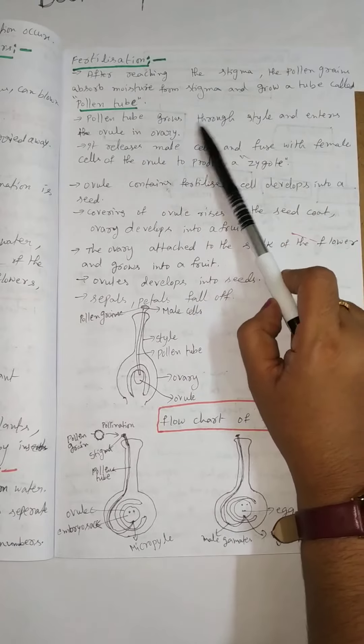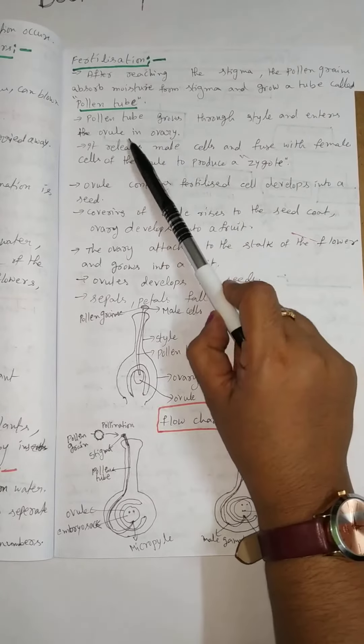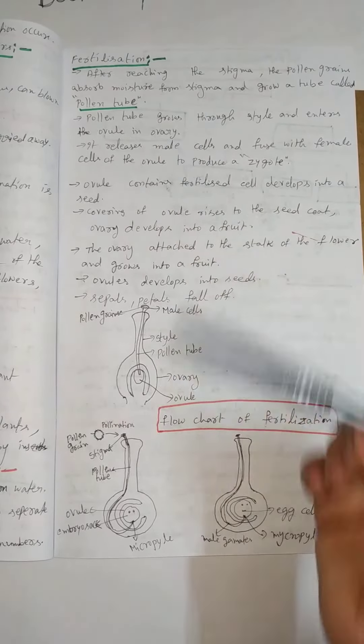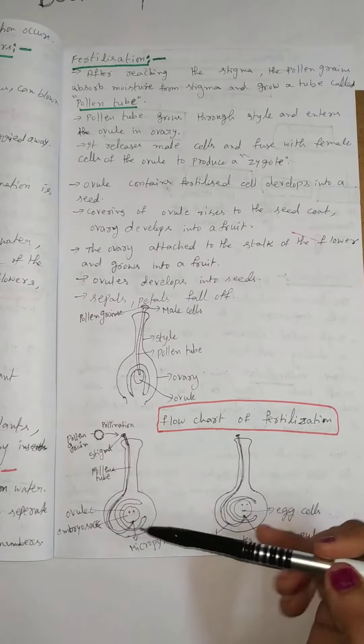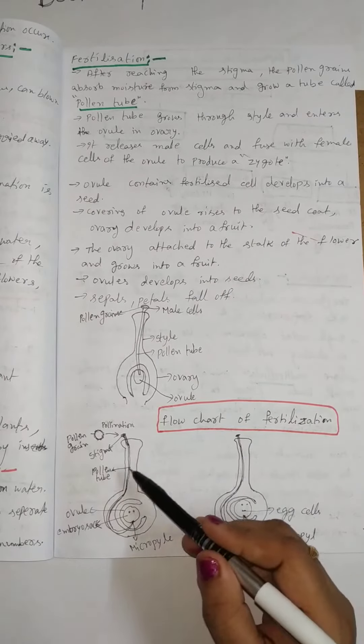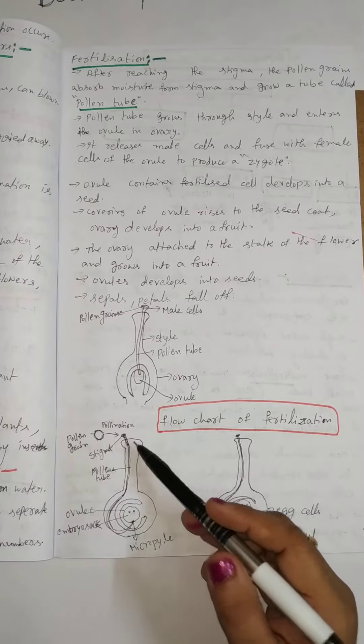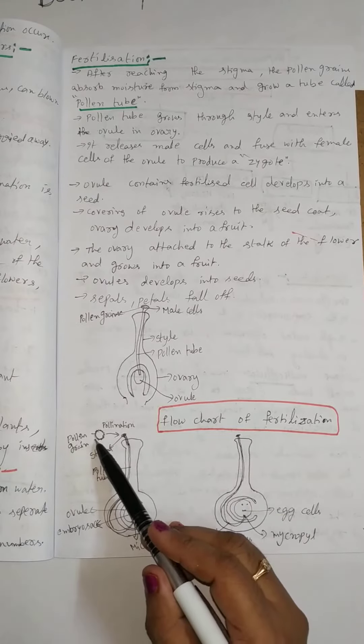The pollen tube grows through the style and enters the ovule in the ovary. This is the diagram. Here this is the ovary, style, stigma. This is the pollen grain.